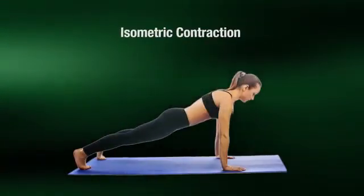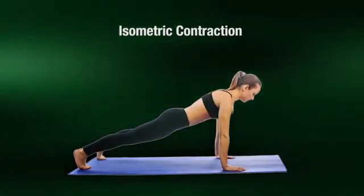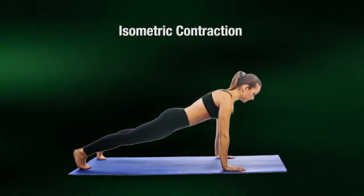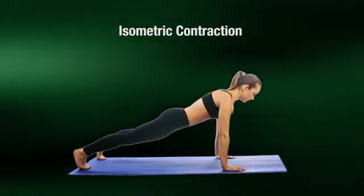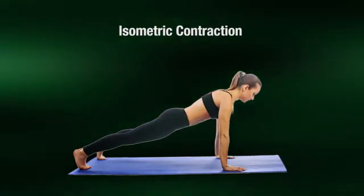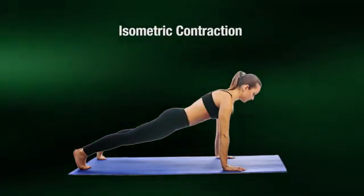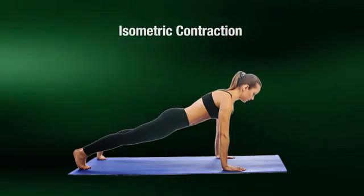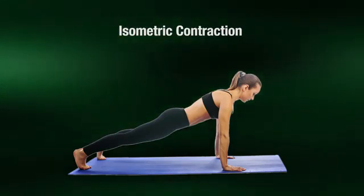Here is an example of an isometric contraction. Pictured is a woman planking. As she holds this position, her muscles are not changing in length, yet tension must be employed in the muscles recruited to prevent her from falling on her face.